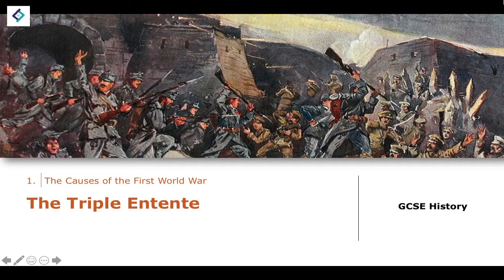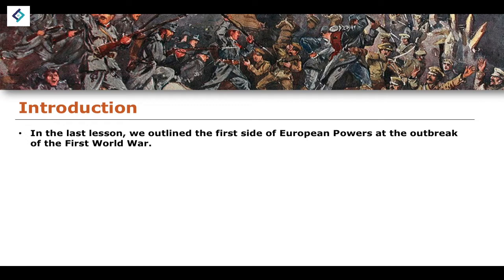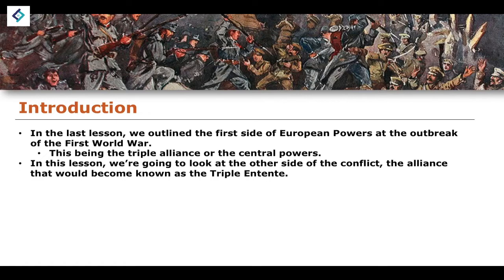In this lesson, what I want to do is talk about the second of these great alliance structures that existed within pre-World War I Europe. This is looking specifically at the Triple Entente, which included Britain, France, and the Russian Empire. In the last lesson, we outlined the first side of these great European powers at the outbreak of the First World War — we looked at the Central Powers or the Triple Alliance system. This lesson is going to be a bit different; we're going to talk about the other side of the conflict, the alliance that will become known as the Triple Entente.